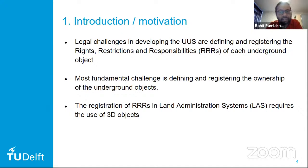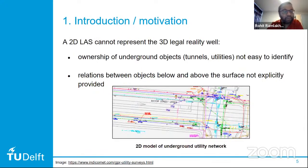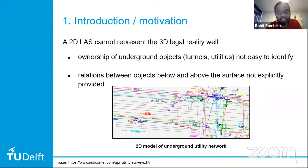The registration of RRRs in land administration systems requires the use of 3D objects. However, a 2D land administration system cannot represent the 3D legal reality well. The ownership of underground objects, such as tunnels and utilities, are not easy to identify. The relations between objects below and above the surface are also not explicitly provided.